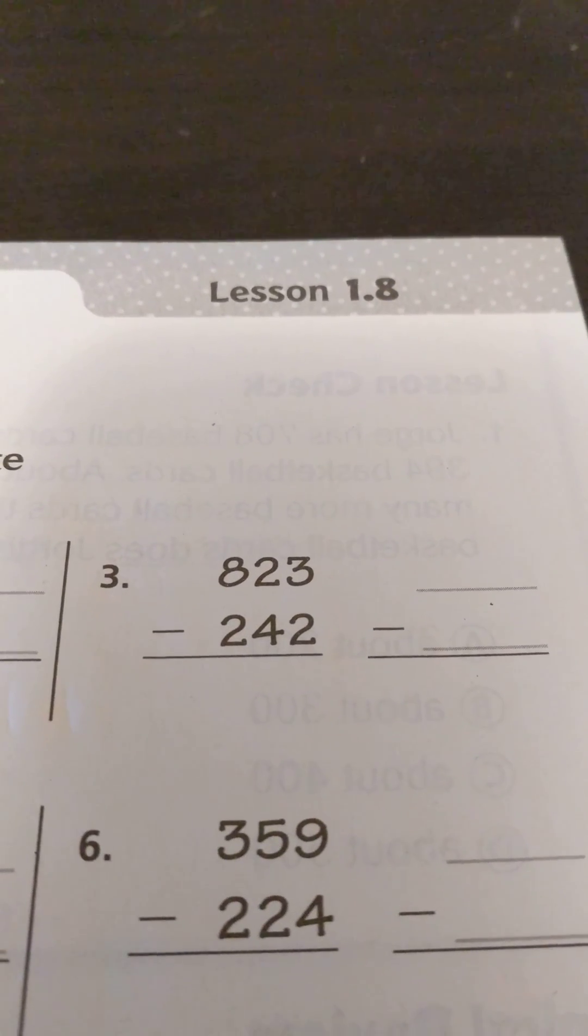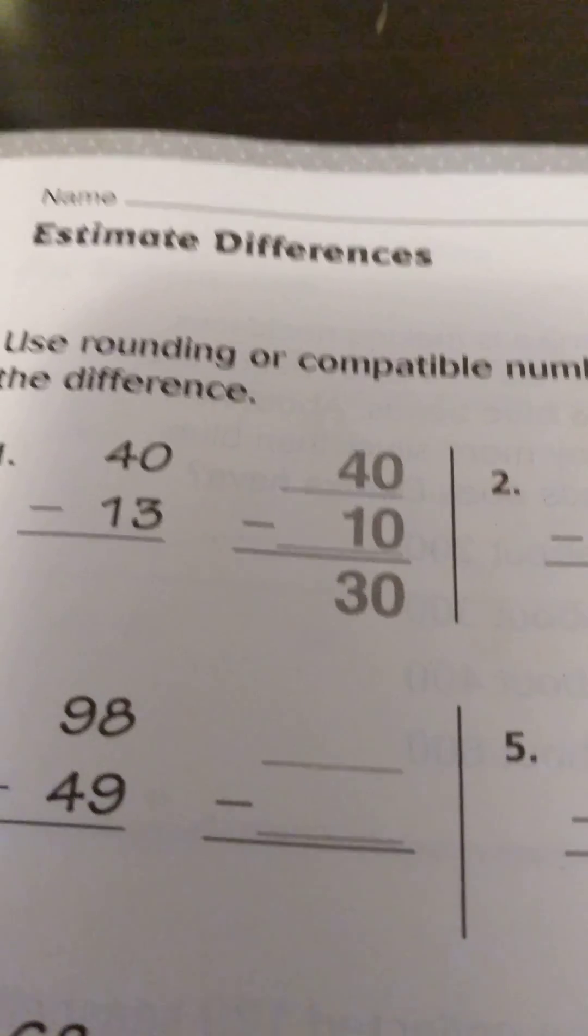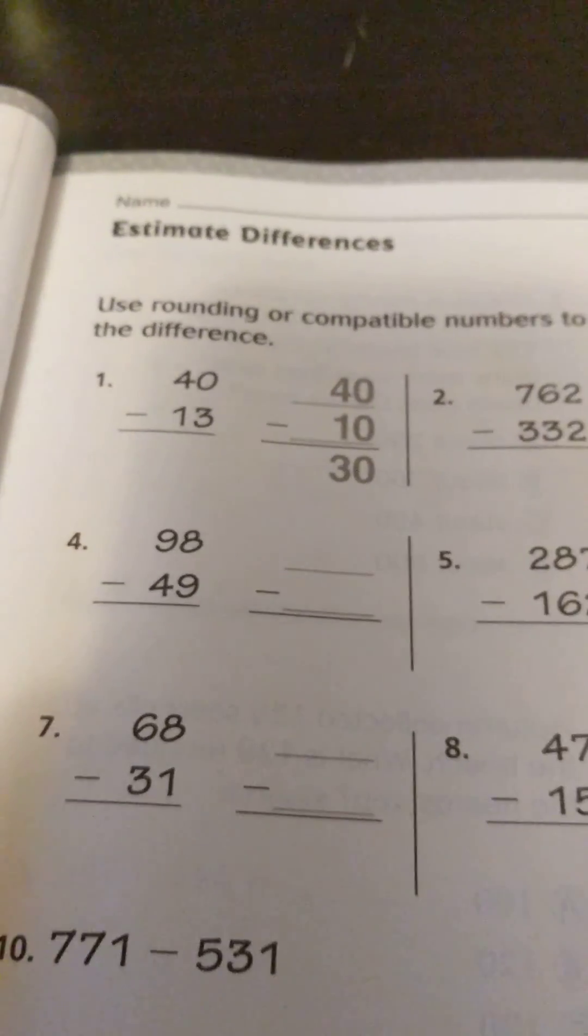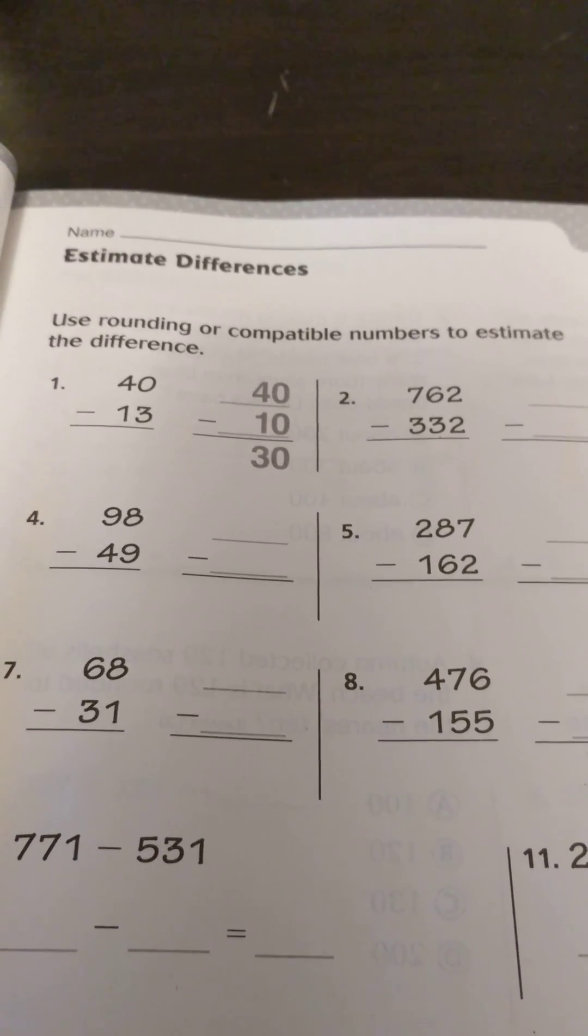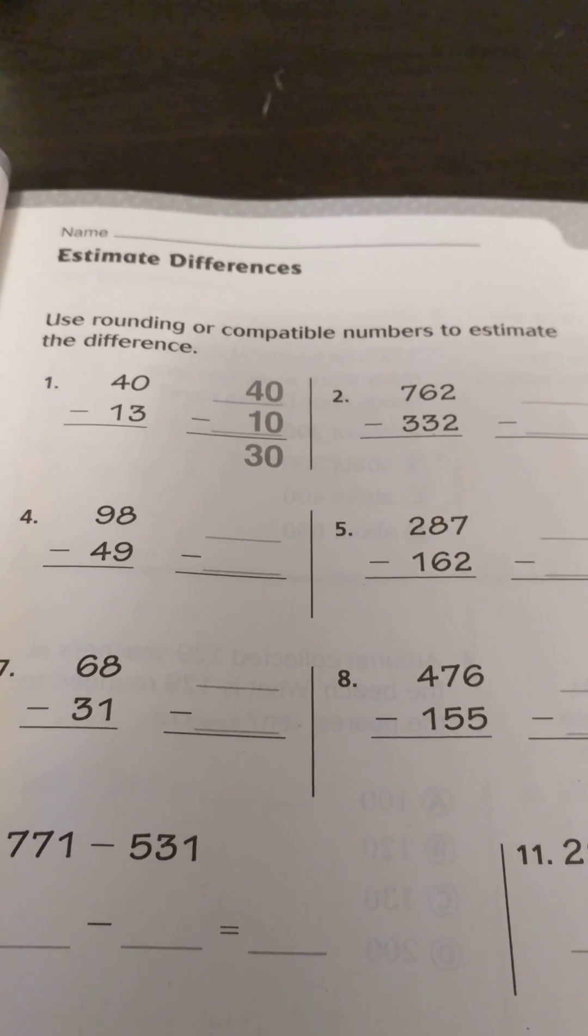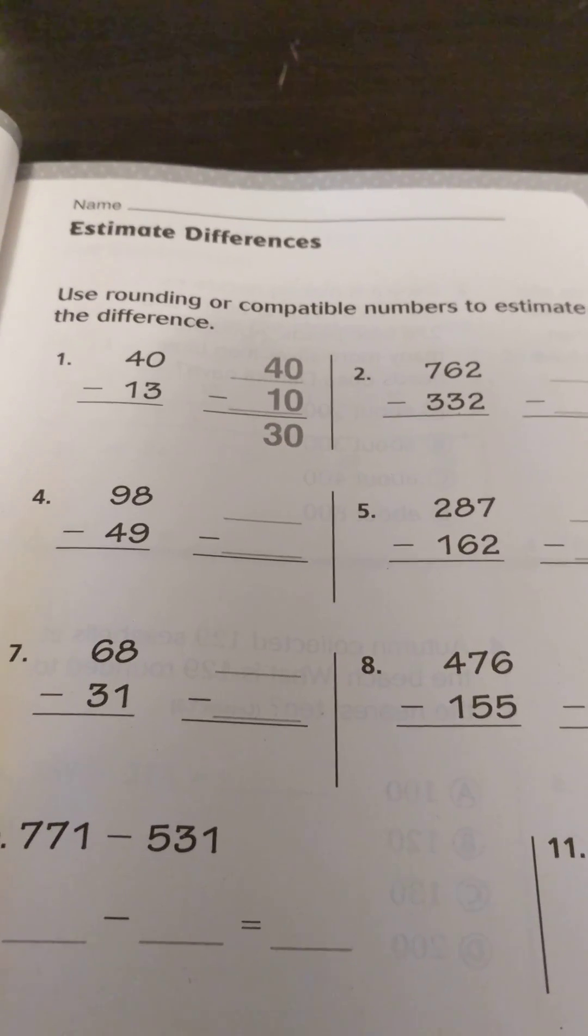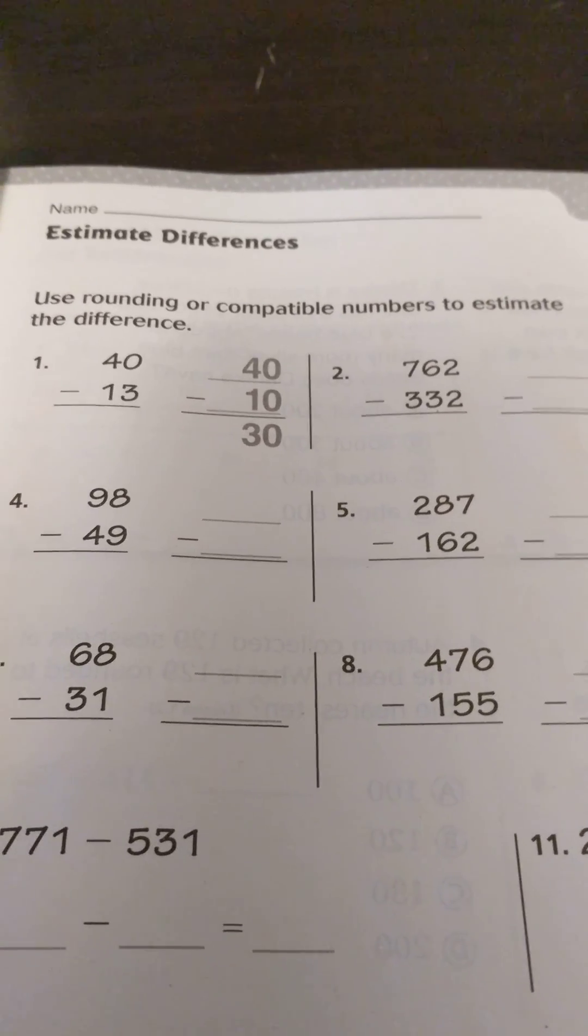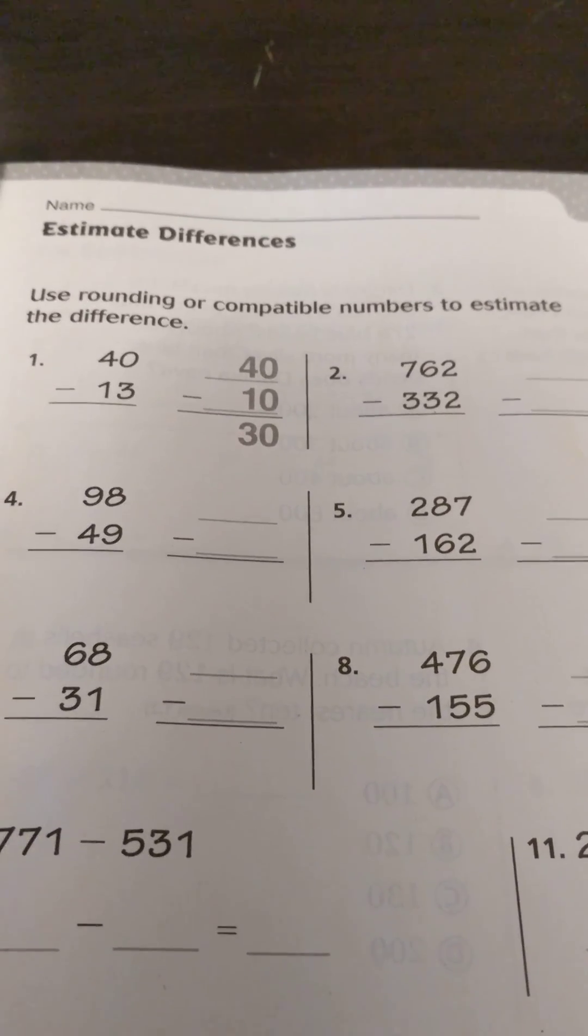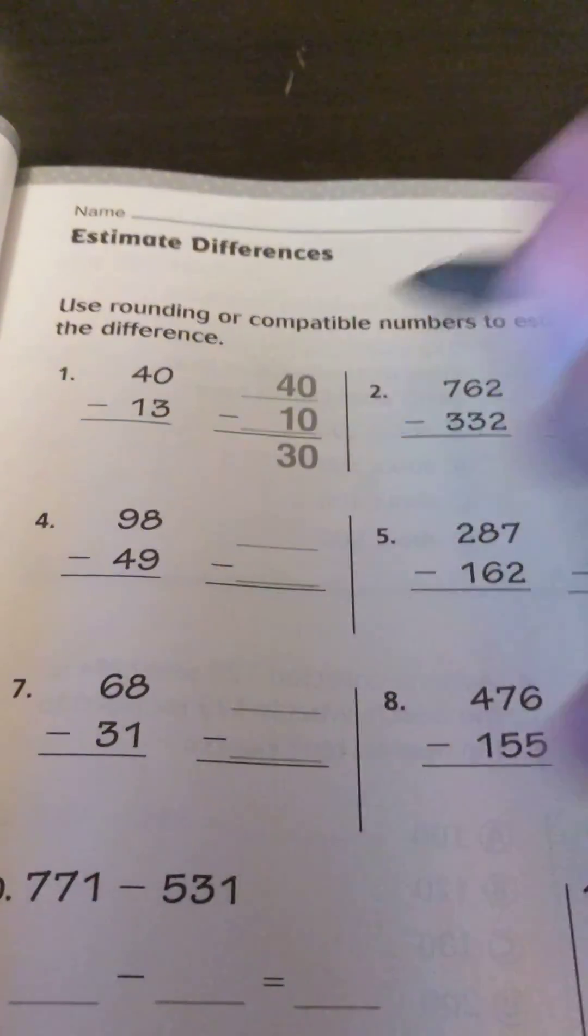This is third grade GoMath lesson 1.8, and today we are going to estimate differences. The directions say use rounding or compatible numbers to estimate the difference. Now, in my class we were not using compatible numbers, so I'm not going to talk about those. As I did in a previous lesson, our district has decided not to worry about that for third grade at this time. So we're going to focus on rounding today.